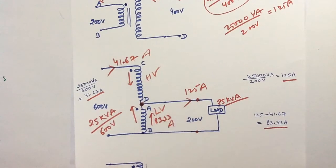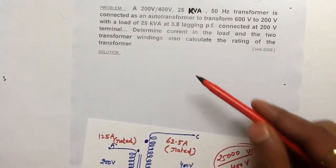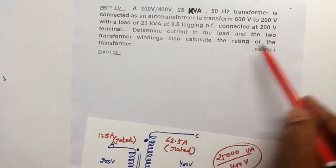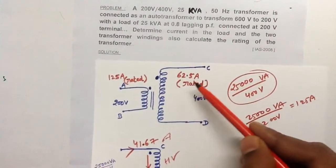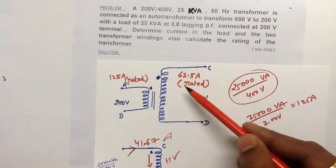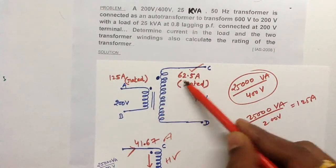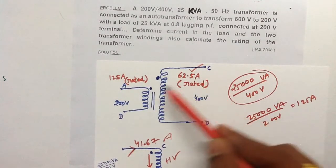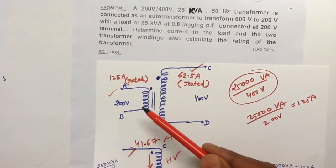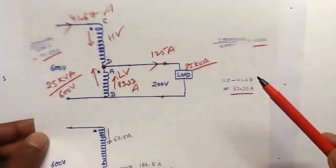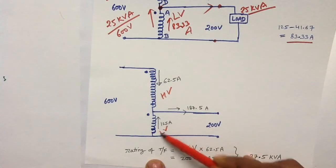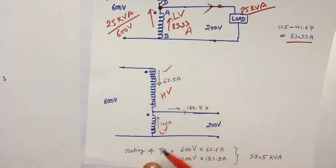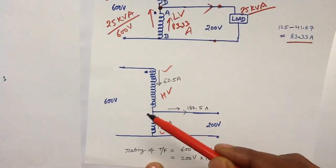The second part of the question is to calculate the rating of the autotransformer. To do this, rated currents must flow in both windings. The rated current in the HV winding is 62.5 amperes and the rated current in the LV winding is 125 amperes.